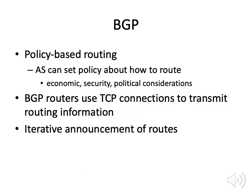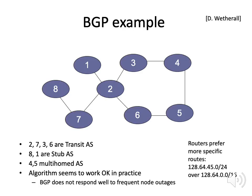BGP is policy-based routing. The autonomous system can set the policy on how to route, but it has to know who can actually deliver the packets. BGP routers set up TCP connections between different autonomous systems to transmit information — they say these are the machines I connect to. It uses an iterative announcement of routes so that each AS announces the hosts it connects to, and then says these are the other ASes it connects to and what addresses they can reach.